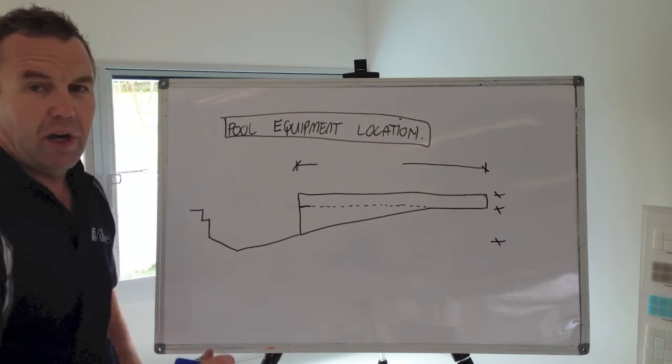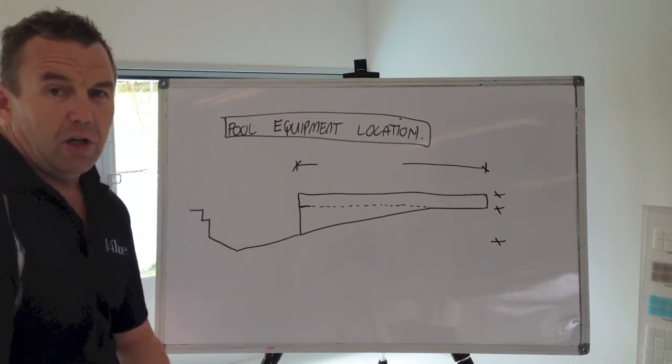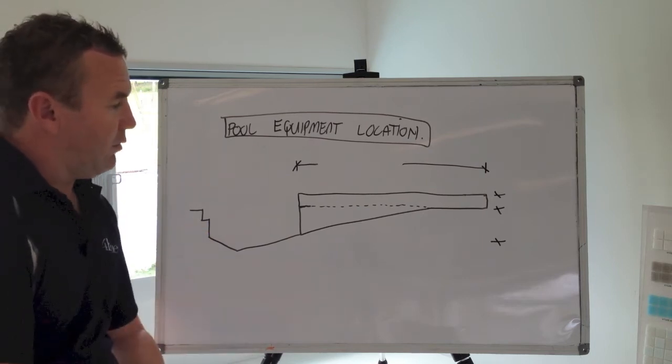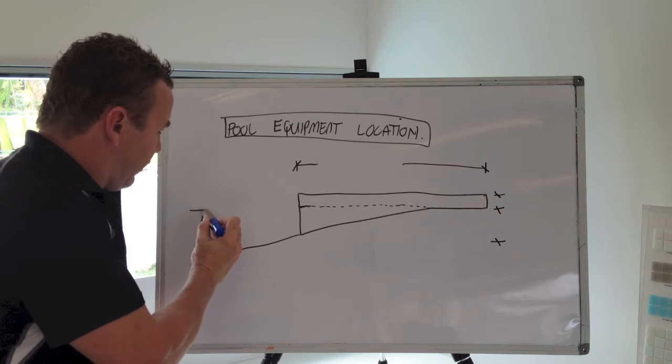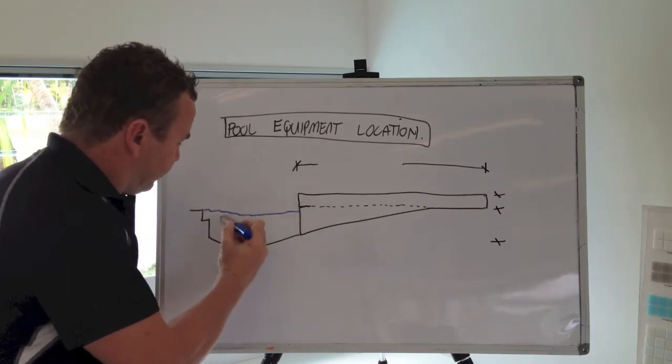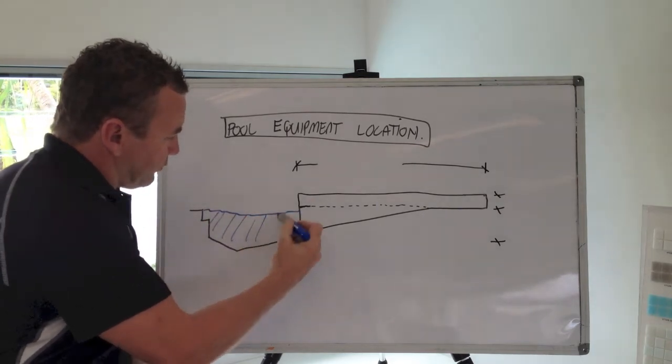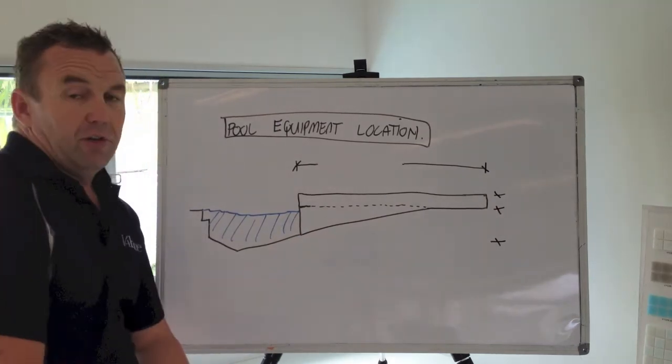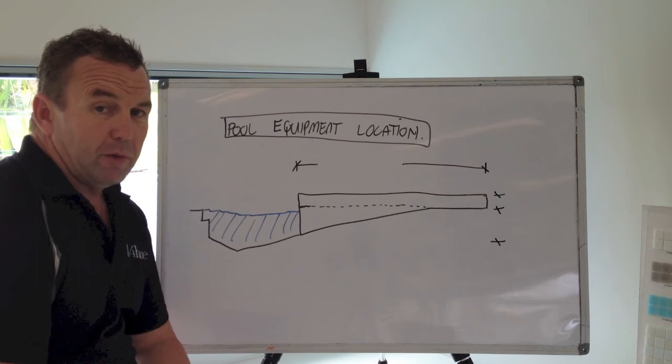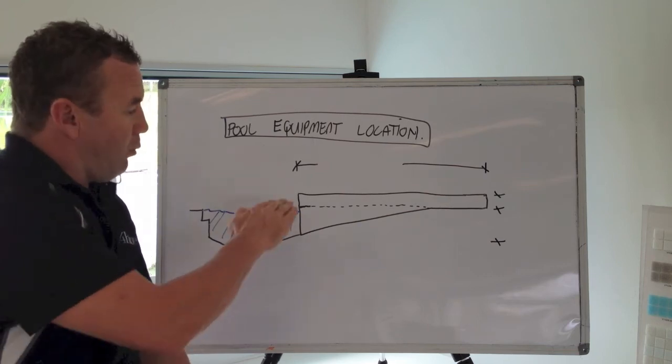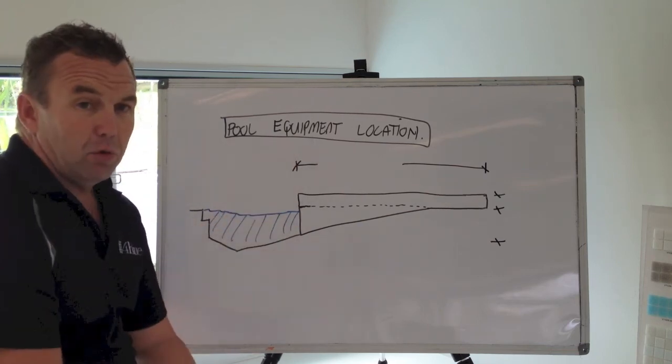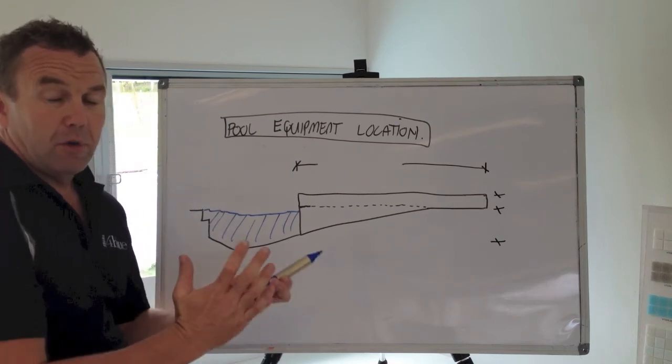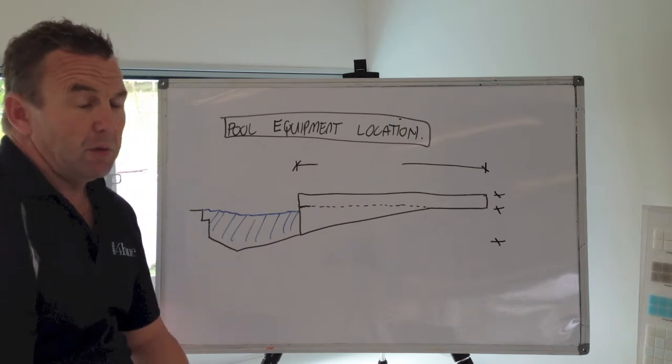So to illustrate to you in this early planning stage, I will put a section up on the whiteboard here. If this is our swimming pool, what this will simply do is illustrate to you how far away from the pool the plant equipment can be, and what height above and below the pool is a comfortable scenario hydraulically for the plant equipment, which is our pumps and filters, to be placed.